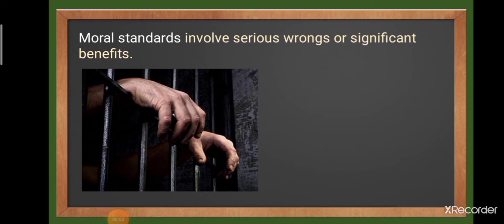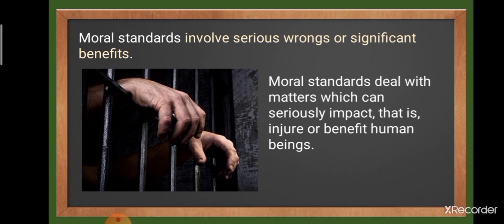To help you differentiate between moral standards and non-moral standards, consider the following characteristics. Moral standards involve serious wrongs or significant benefits — they deal with matters which can seriously impact, that is, injure or benefit human beings. For example, rape is not only illegal but also considered immoral because it can seriously affect the life of the victim. However, this is not the case with many non-moral standards. For example, a person who chooses to wear what others may consider as revealing or weird cannot be judged as immoral, because his or her actions do not necessarily affect his or her well-being.